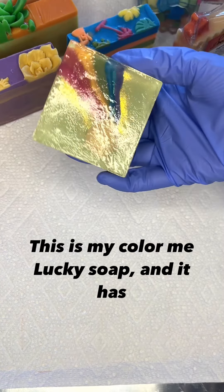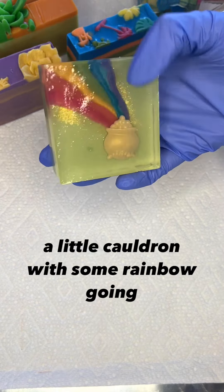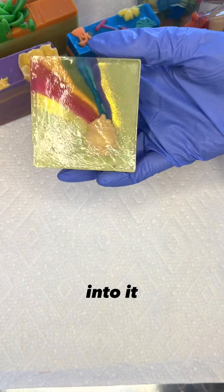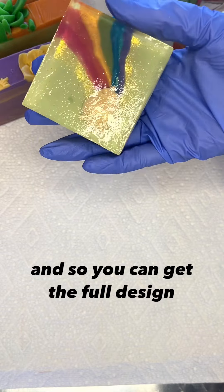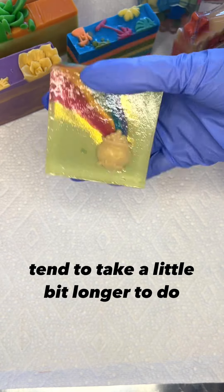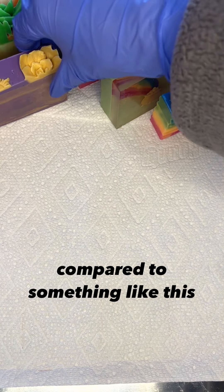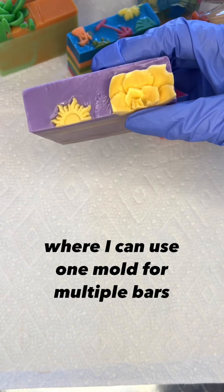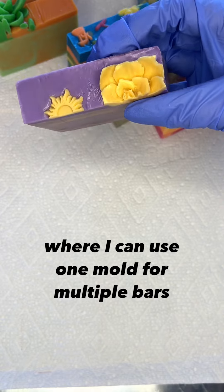This is my Color Me Lucky soap and it has a little cauldron with some rainbow going into it, and so you can get the full design uninterrupted in one bar of soap. These tend to take a little bit longer to do compared to something like this where I can use one mold for multiple bars.